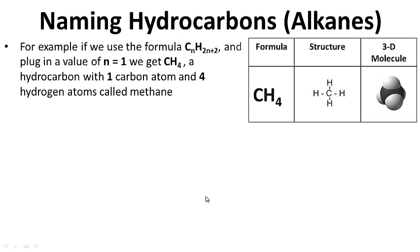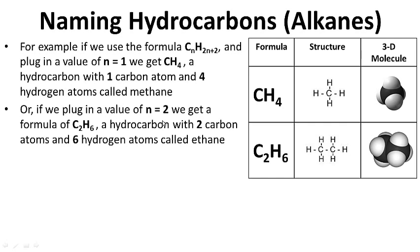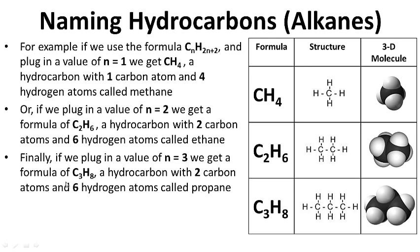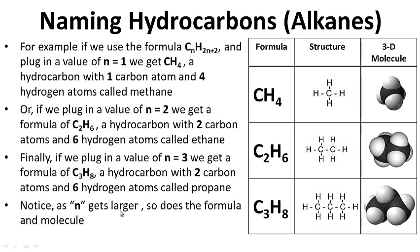Using the formula CₙH₂ₙ₊₂: if N = 1, we get 1 carbon atom and 2(1)+2 = 4 hydrogen atoms, giving us methane, CH4. If N = 2, we get 2 carbon atoms and 2(2)+2 = 6 hydrogen atoms, giving us ethane, C2H6. If N = 3, we get the formula C3H8 — 3 carbon and 8 hydrogen — and that's called propane. So we have methane, ethane, and propane. Notice that as N gets larger, so does the formula and the molecule.